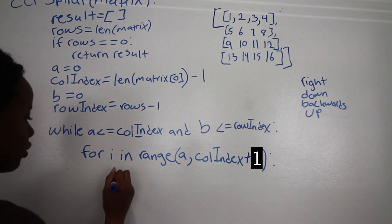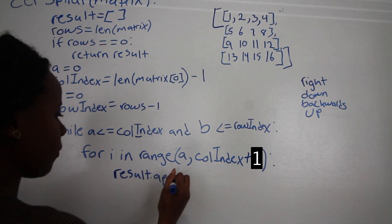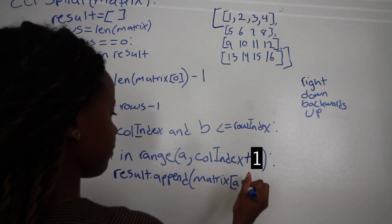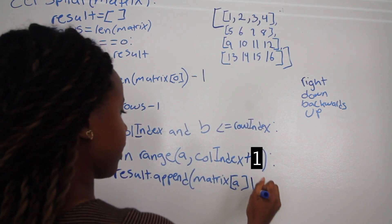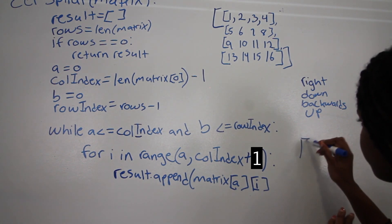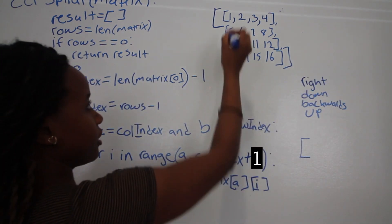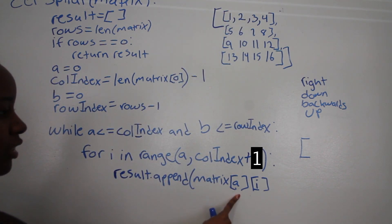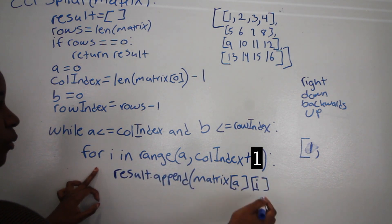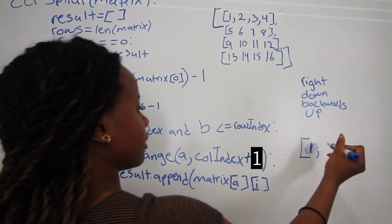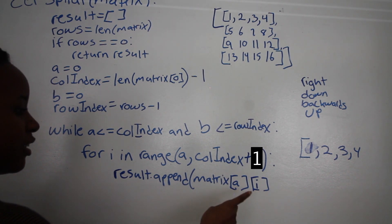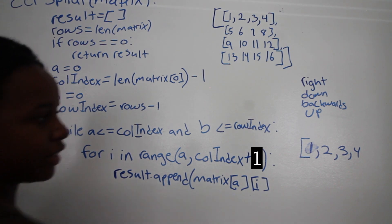Then we append to results: result.append(matrix[A][i]). A is zero — the first row — and I iterates. So first iteration: matrix[0][0] is 1, then matrix[0][1] is 2, then matrix[0][2] is 3, then matrix[0][3] is 4. So we've grabbed the entire first row. Next, we want to grab the column going down, so we increment B with B += 1 to show we've moved one row down.